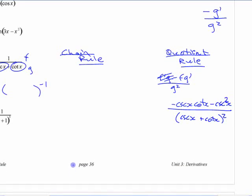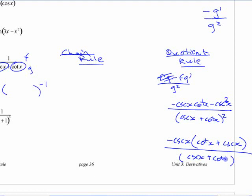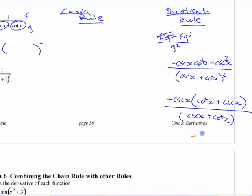If you want to simplify that, you need to factor the top. If you factor out a negative cosecant out of the top, you're left with cotangent plus cosecant. And the bottom, you have two of those factors, cosecant plus cotangent. So if you cancel one of them, you got one here and you have two of them there. So cancel one of those. That just makes it minus cosecant over cosecant x plus cotangent.